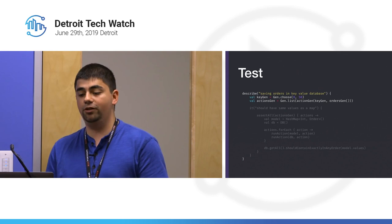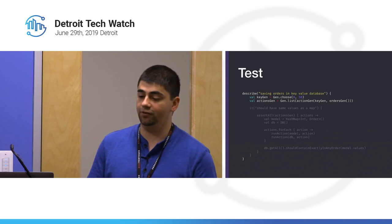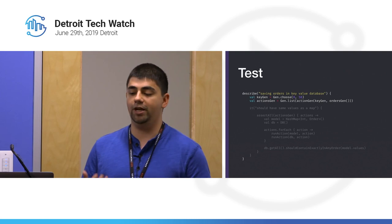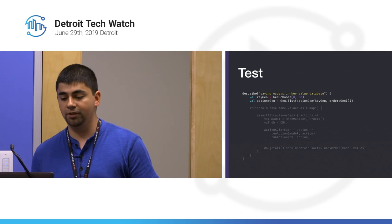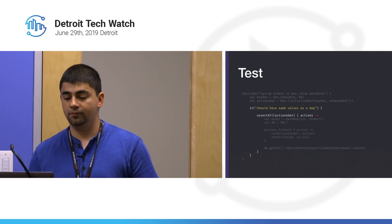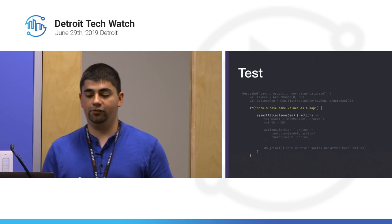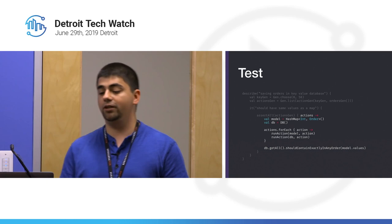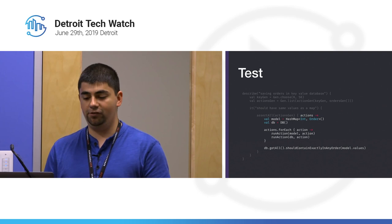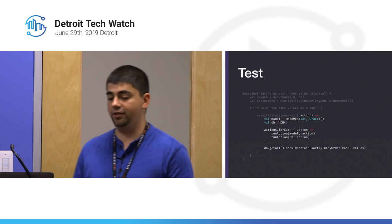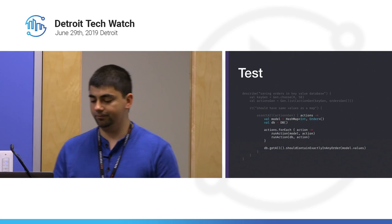We create a runner that takes a model (our map) and an action, and uses pattern matching to invoke the appropriate method. For a Save action, we run model.put with the action's key and value. We do the same for the database — pattern match on the action and invoke the corresponding method. In the test, given a random list of actions, we create a model and a database, run every action on both, and assert at the end that they contain the same values.